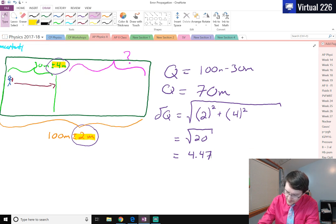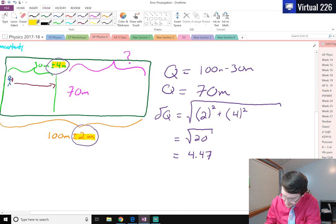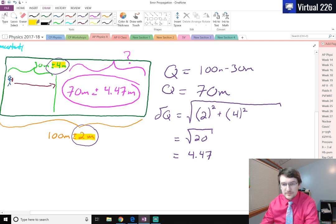So our final answer of how much of the field do they have left over: the amount of field they have left over is 70 meters plus or minus 4.47 meters.